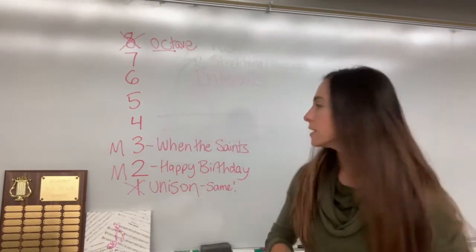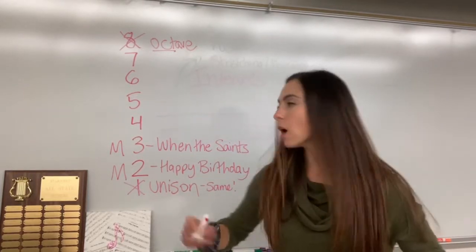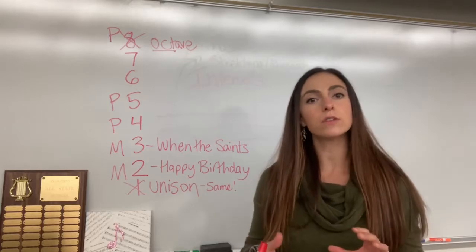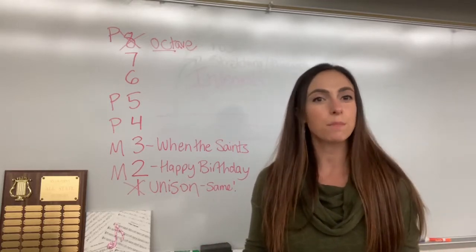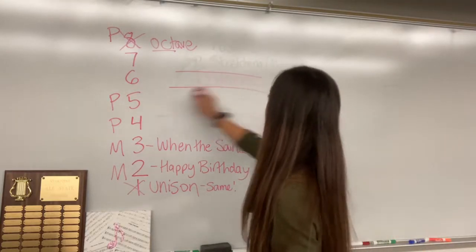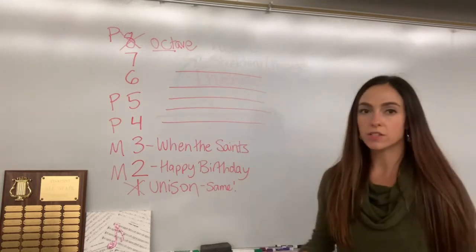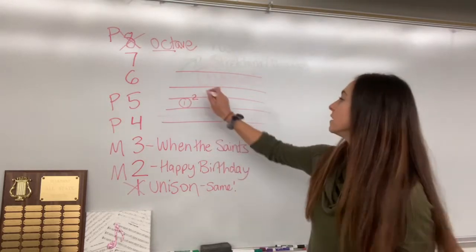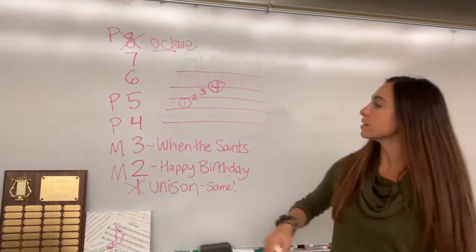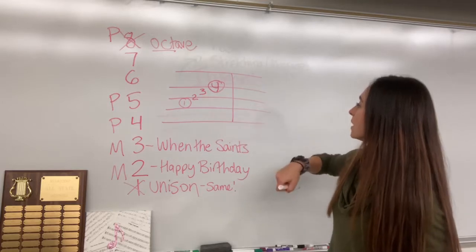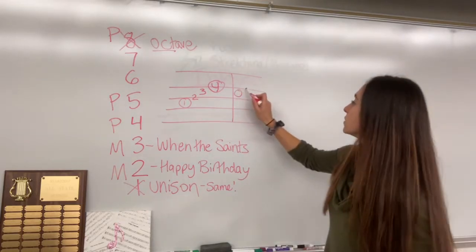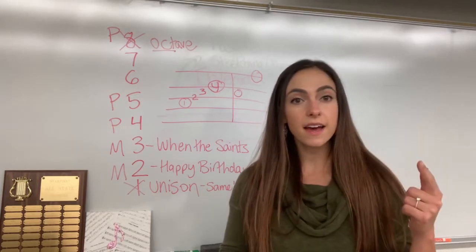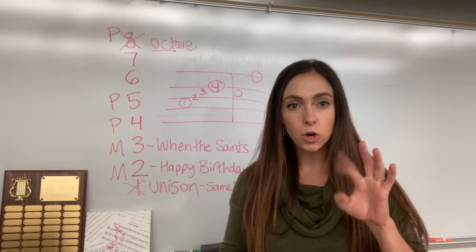Next let's talk about fourths. You would think I would write M for major fourth, but actually we call fourths, fifths, and octaves perfect intervals. The reason why is because they're the only intervals that tune perfectly. So instead of calling it major, I would say a perfect fourth. An example of a perfect fourth: I'm going to draw a DO — remember DO can go anywhere — and count up four spots: one, two on the line, three on a space, and a perfect fourth. People remember this one by thinking of the song Here Comes the Bride: DO FA — that's a perfect fourth.